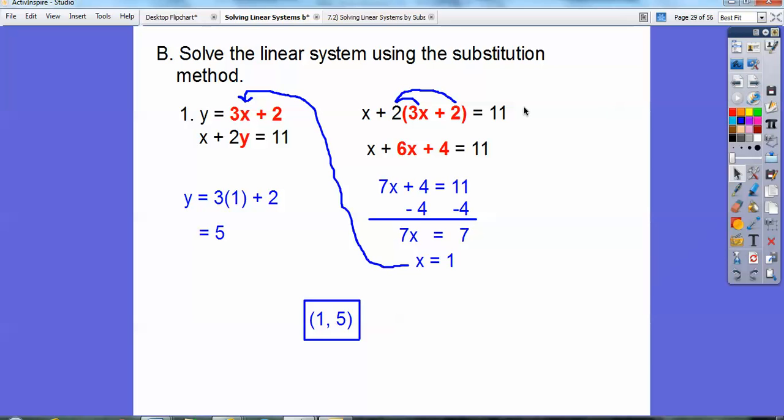And these are the same equations that we did in section A, you guys, so it's the same answer. Okay, when we graphed that line and then we graphed that line, they intersected at 1, 5. Okay, the substitution method is pretty slick.